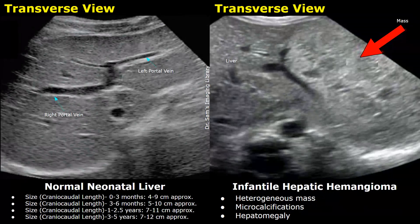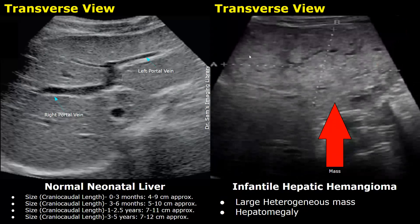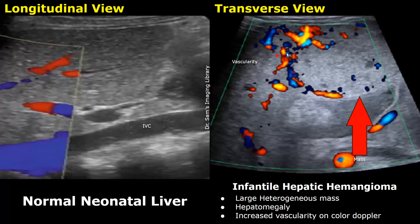A hemangioma occurring in infants is given the term infantile hepatic hemangioma. In this case, there is a large heterogeneous hyperechoic mass in the liver with some microcalcifications, and hepatomegaly was observed. In another case, a large heterogeneous mass is seen in the liver, again with hepatomegaly. The hemangiomas will show increased vascularity on color Doppler.